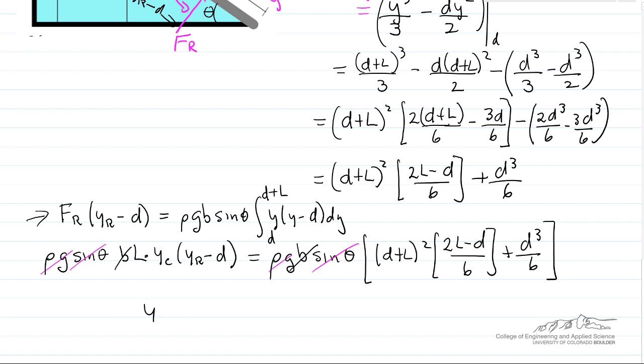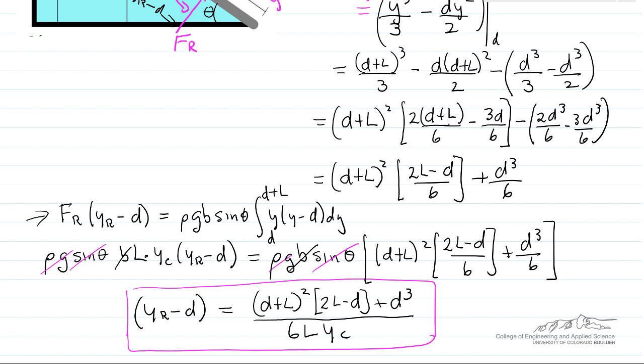So now I've solved for y_r minus d, the distance of the resultant force from the hinge. This tells us where that resultant force is located. And remember that y_c is d plus l over 2.